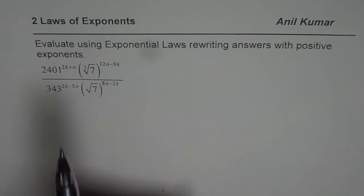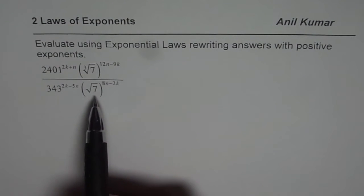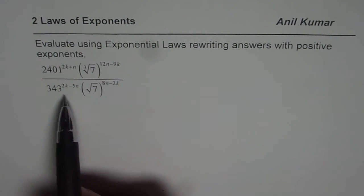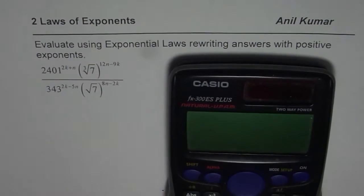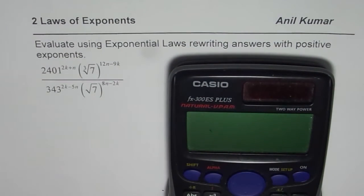Now from the question there is one indication, that is, these numbers should be related with powers of 7. So we can take our calculator and figure out what power of 7 is 2401 and what power of 7 is 343. That will actually help us to simplify the given expression.